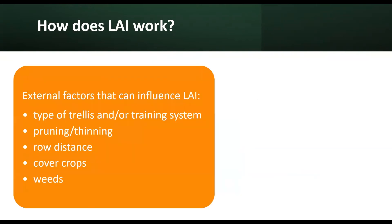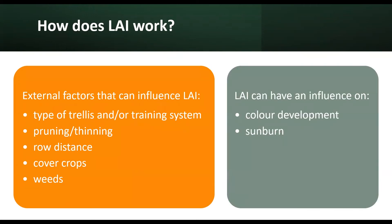External factors that can influence LAI include the type of trellis and/or training system, pruning and thinning, row distance, and cover crops and weeds. Because LAI has to do with light interception, it can have an influence on colour development or sunburn.